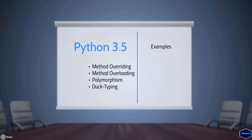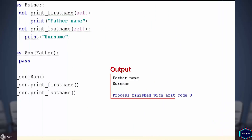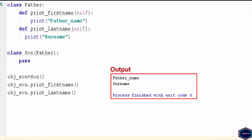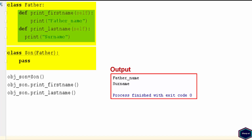Let's start first with method overriding. Method overriding is the ability of a class to change the implementation of methods provided by one of its parent classes. In this example I have two classes: class father and class son. Class father contains two methods, print first name and print last name. Son is an empty class but it inherits all the properties of class father.